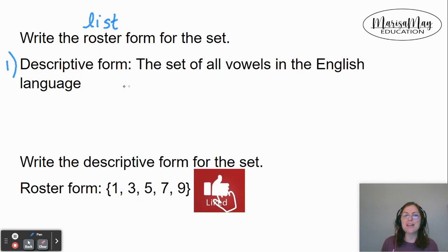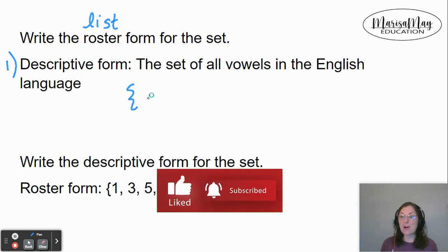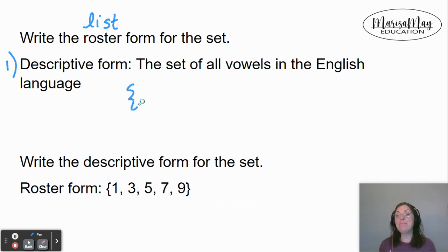So I'm going to list out all of the items that meet that criteria. The set of all vowels in the English language would be {a, e, i, o, u}. Notice how I just listed them out.